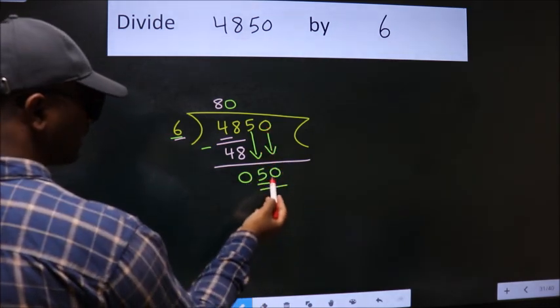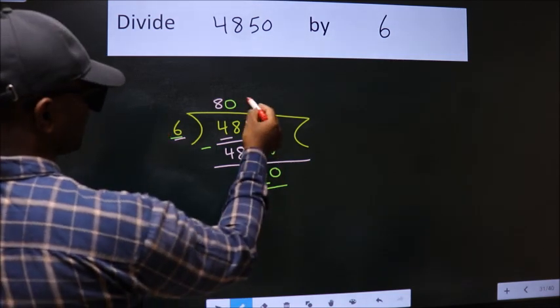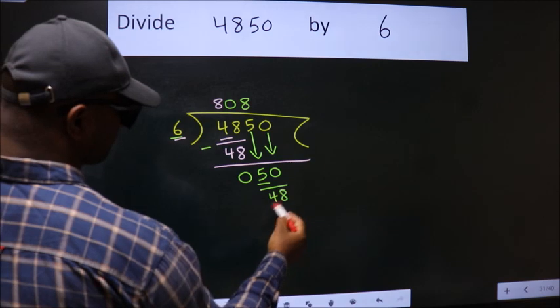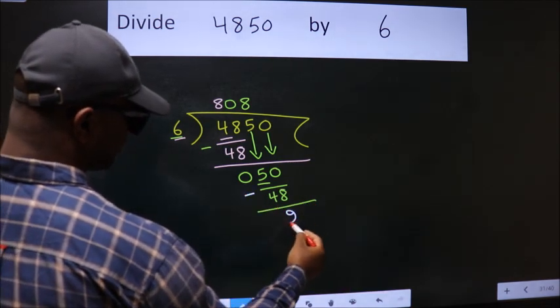So, 50. A number close to 50 in the 6 table is 6 times 8 is 48. Now we subtract. We get 2.